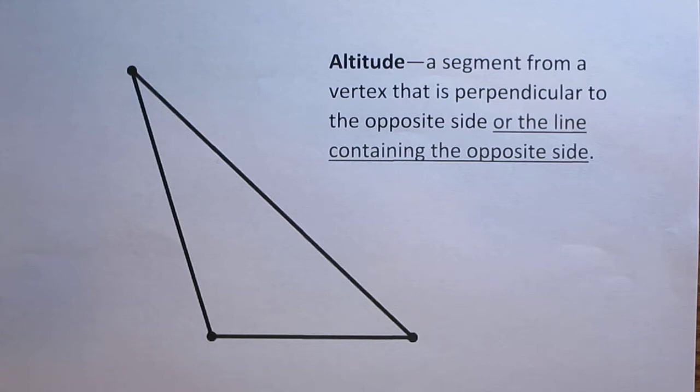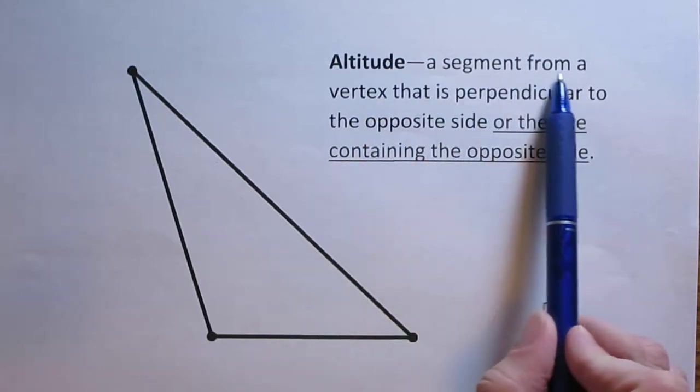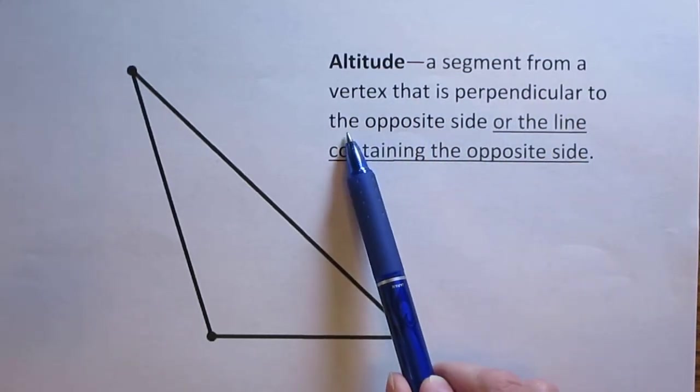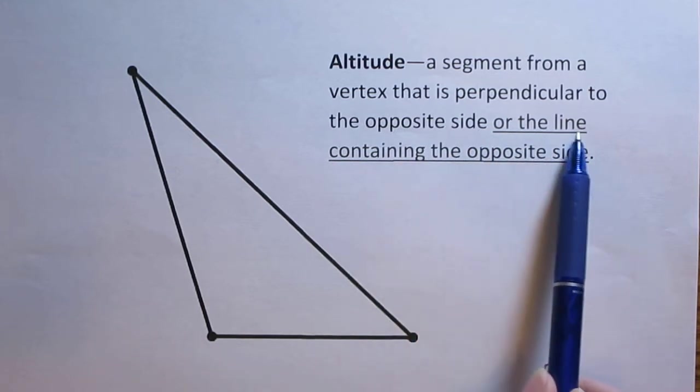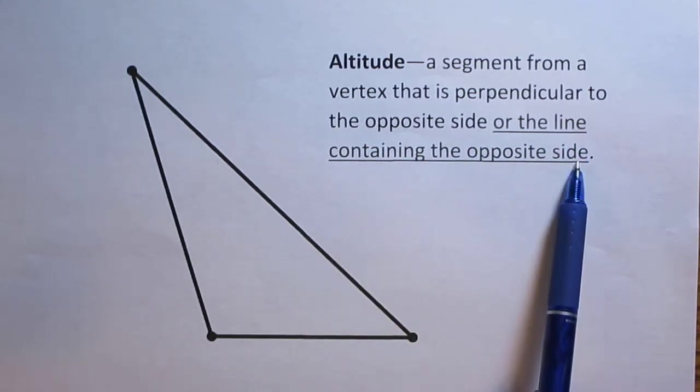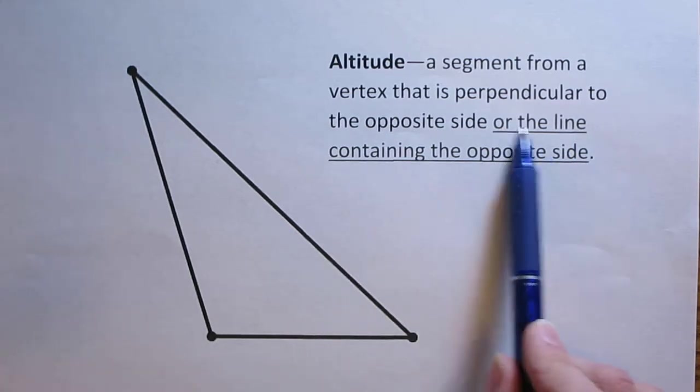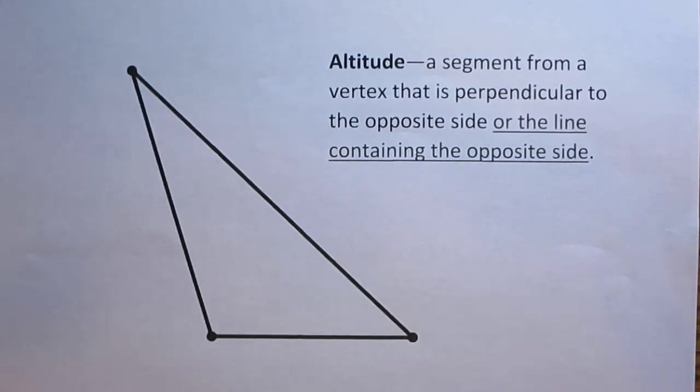Now for an obtuse triangle things work out a little bit differently. Notice again the definition of altitude is a segment from a vertex that is perpendicular to the opposite side or to the line containing the opposite side. Now this is the part we're going to focus on for an obtuse triangle, the line containing the opposite side. What does that mean?